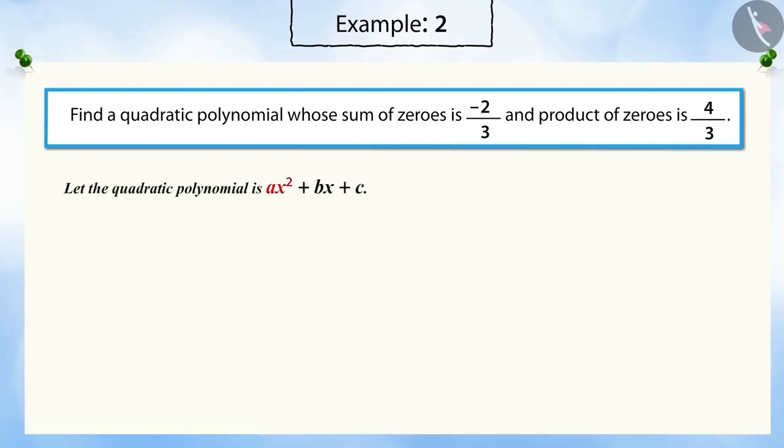Here, the quadratic polynomial is ax² + bx + c. We know that the sum of zeros is -b/a and the product of the zeros is c/a.